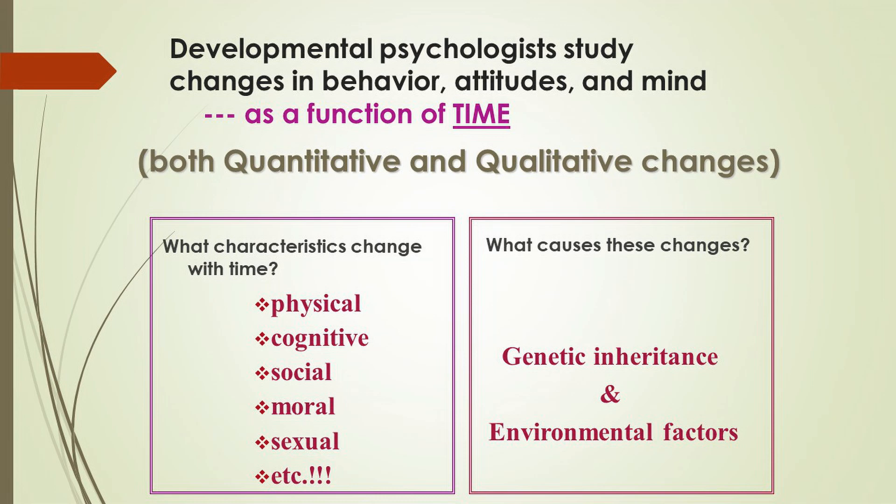In these lectures we'll be talking about the first four, and you can read in your textbook about additional characteristics that can change over time. First, however, we need to answer a very important question: what causes these developmental changes? The answer is genetic inheritance and environmental factors. You may already be familiar with the so-called nature-nurture controversy. The answer is definitely both genetic inheritance and environmental factors when you look at the development of any type of behavior.